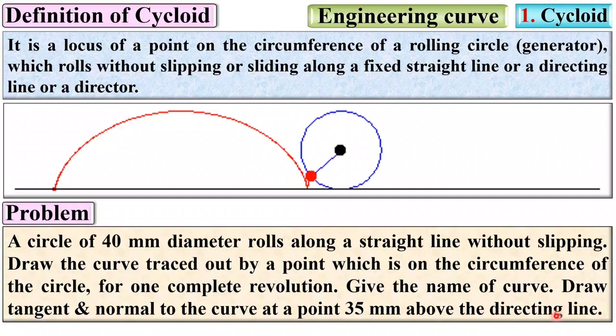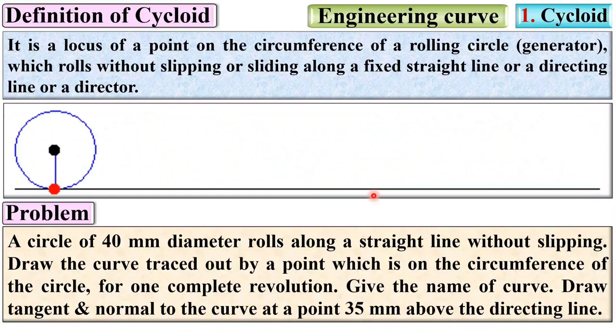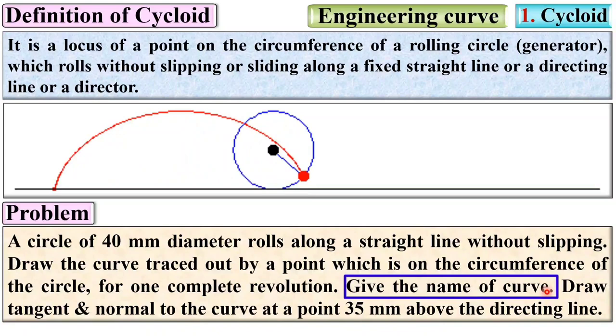Looking at the description: a circle of 40 mm diameter rolls along a straight line, so definitely the output will be the cycloid. Your second answer is already known — the name of the curve is cycloid. Now let us see how to solve this problem step by step.